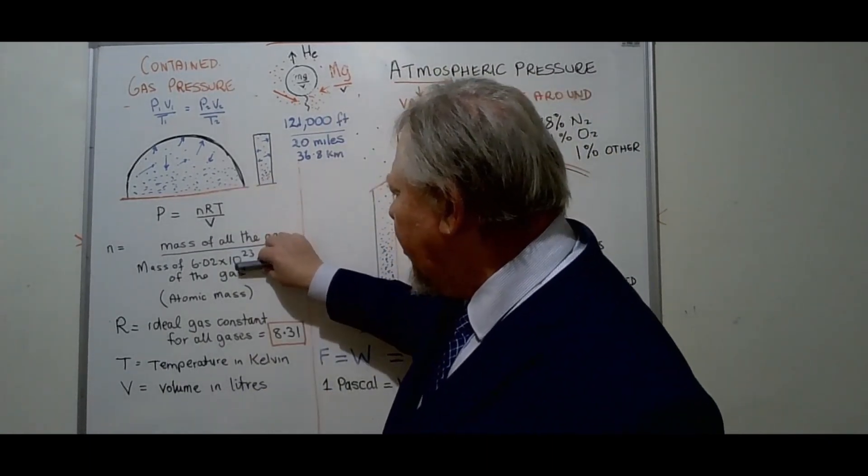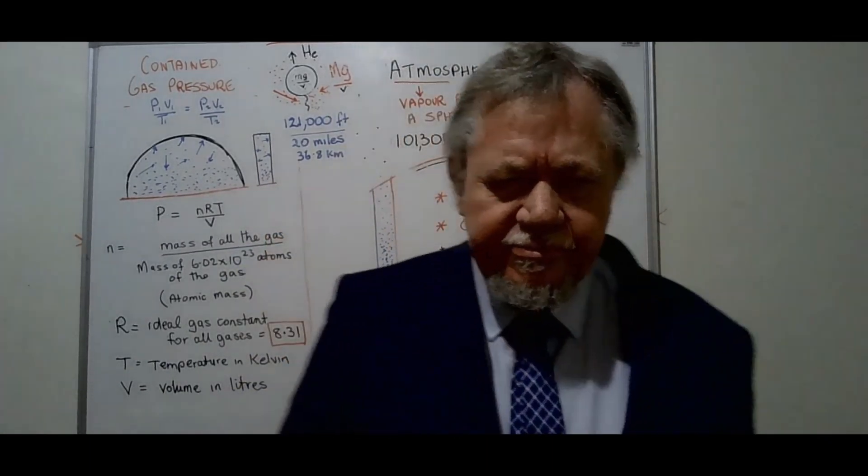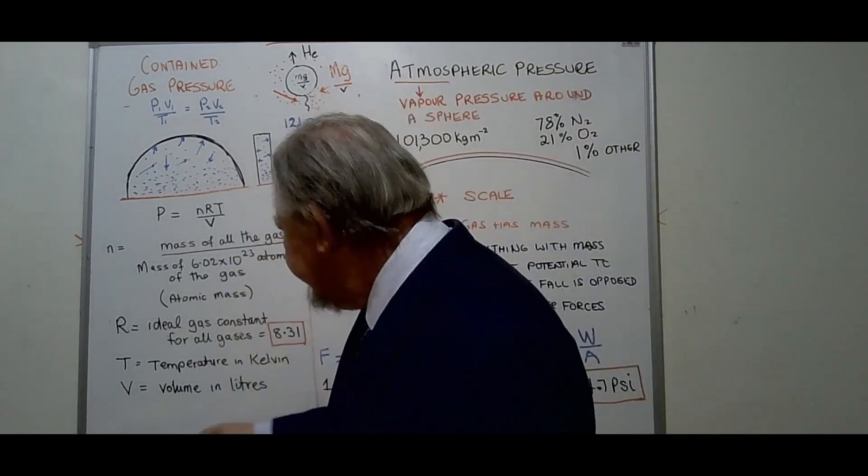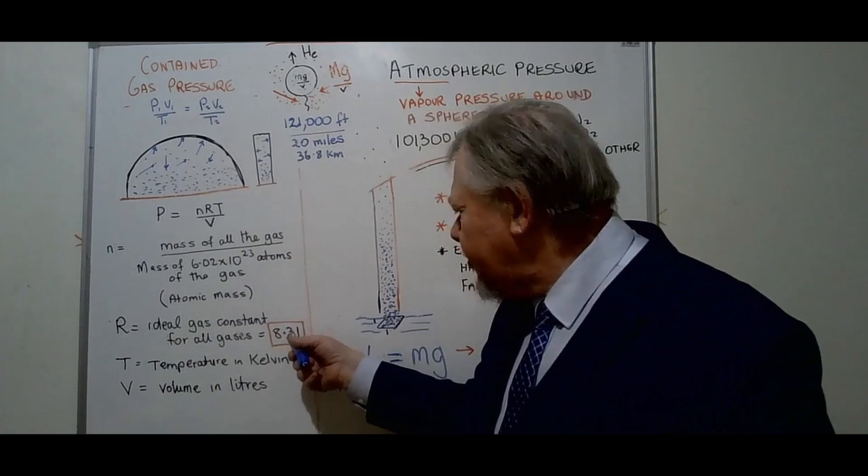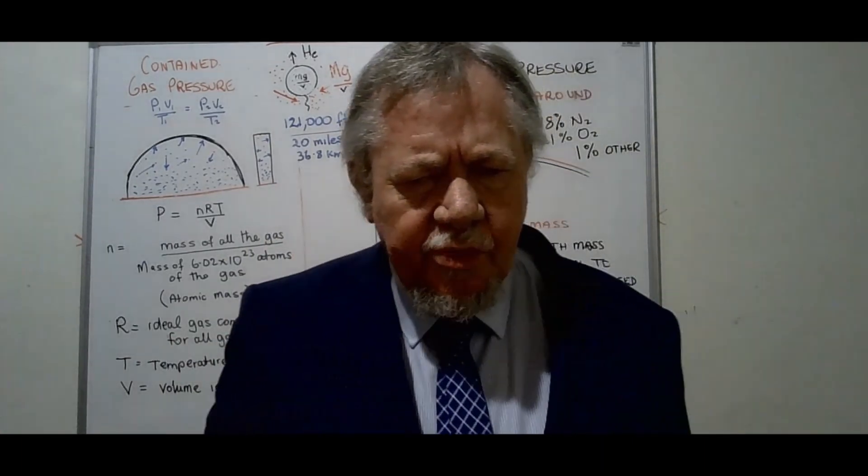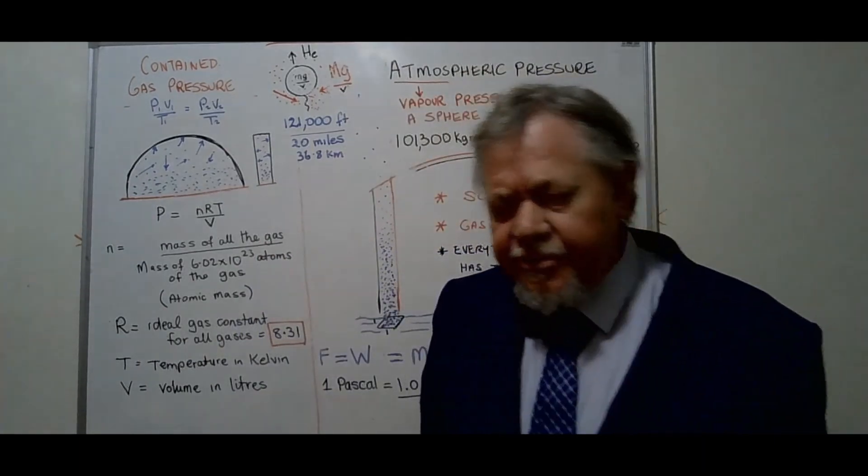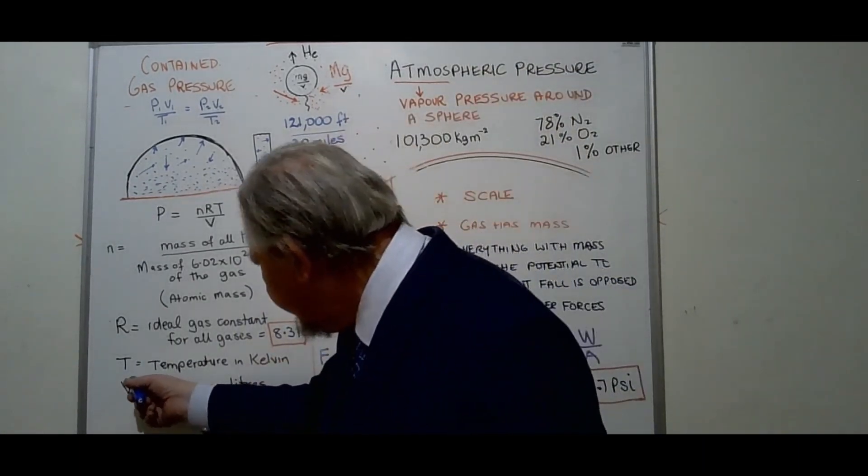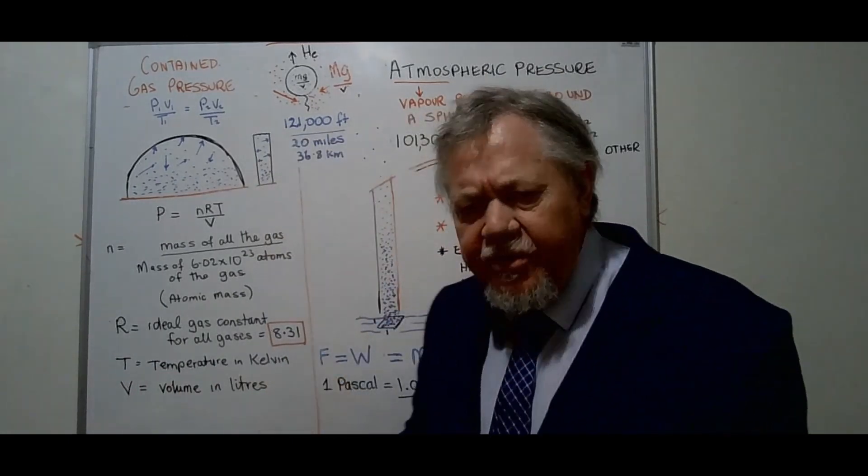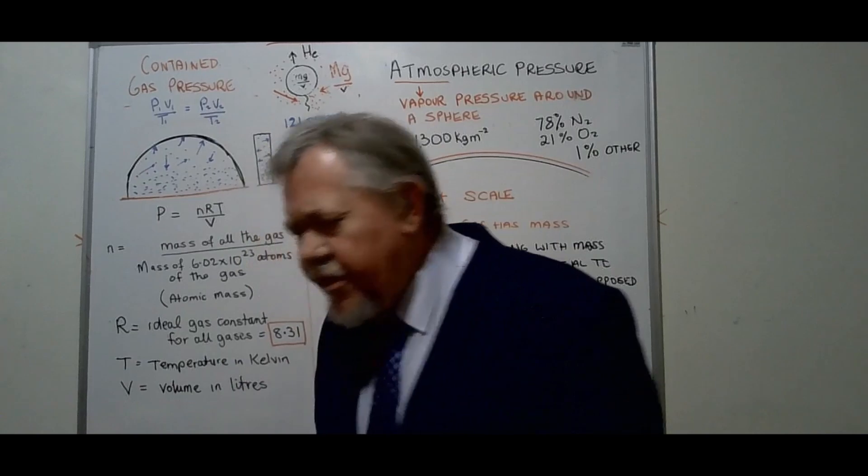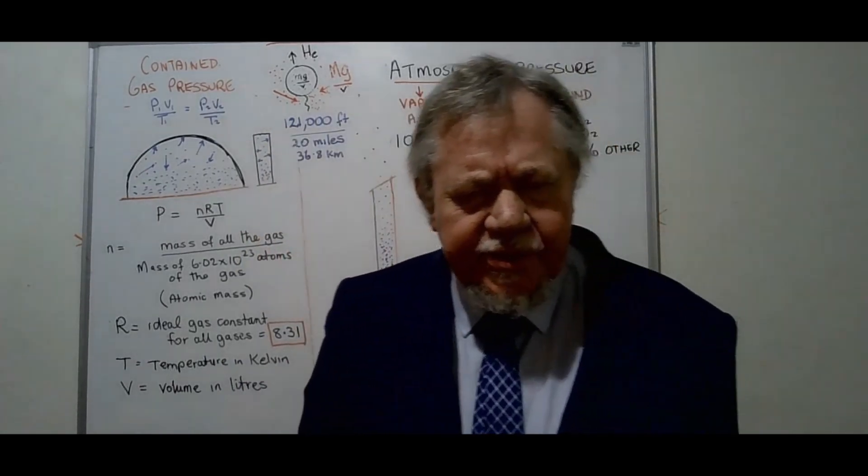And those atoms together, let's say for helium, add up to 4 grams. So this therefore is the mass of all the gas divided by the atomic mass, okay, or molecular mass. R is the ideal gas constant for all gases and comes to 8.31. So that's, if you like, a constant that's averaged out. And temperature is in Kelvin and volume in liters.